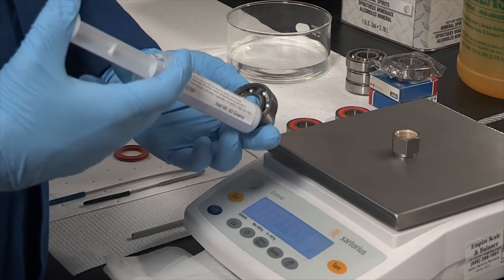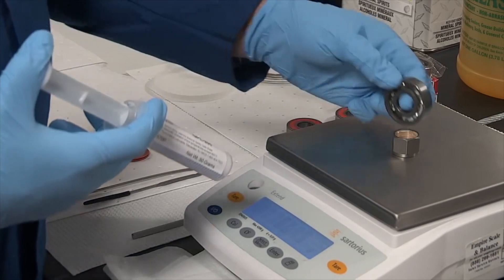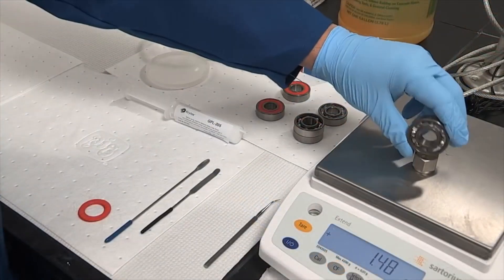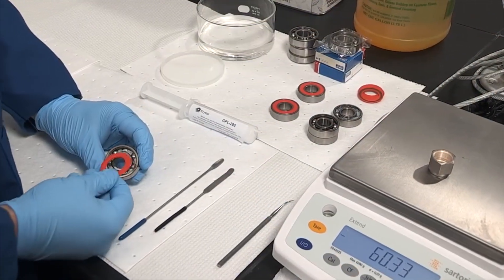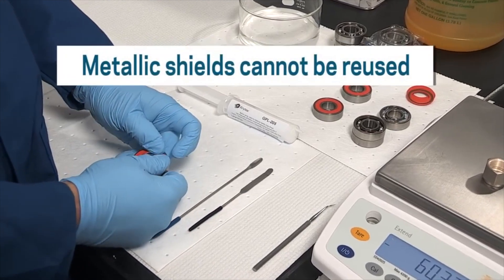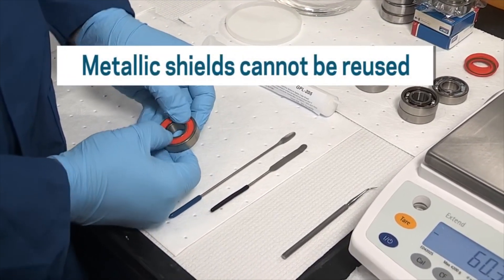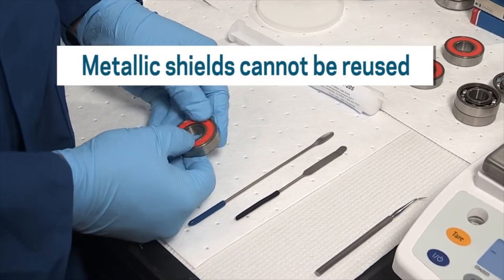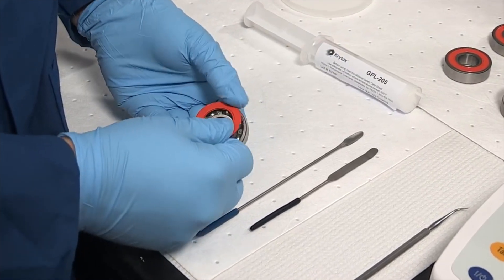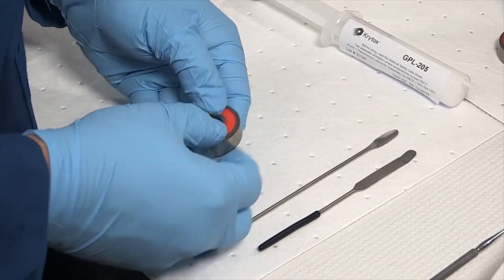Grease fills can range from about 15 to 80 percent, depending upon the application. To avoid causing damage or premature leaking, carefully replace the seals. Metallic shields cannot be reused, and this shielded type of bearing can only be re-lubricated if you have a supply of new shields and the tool to set the shields into the bearing.